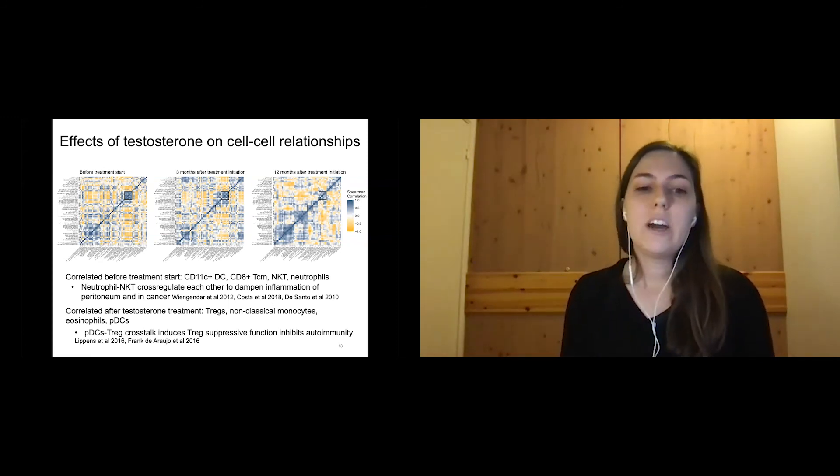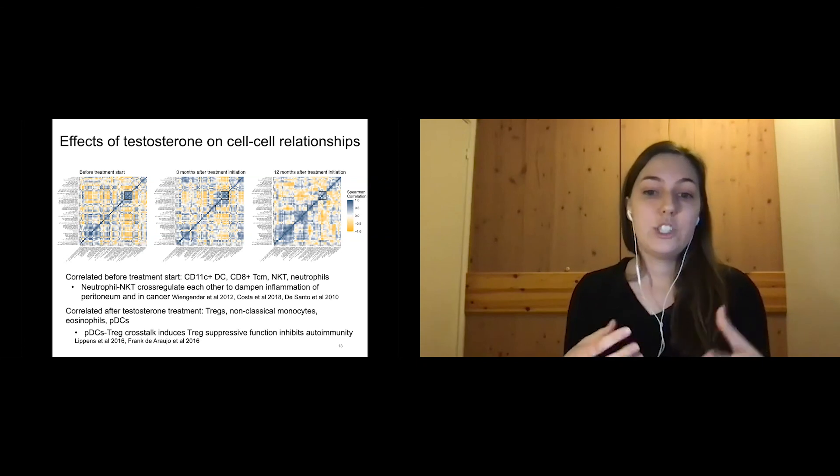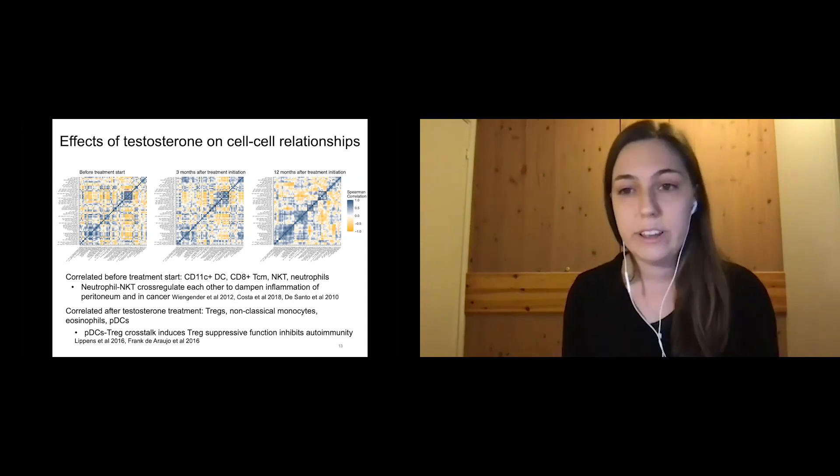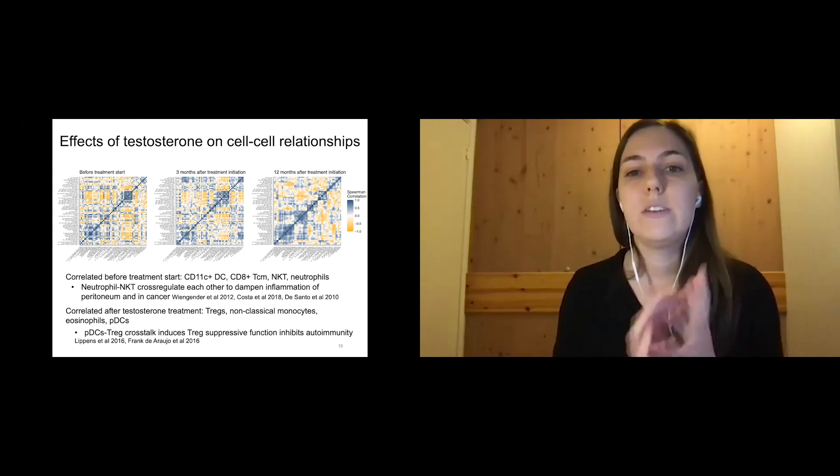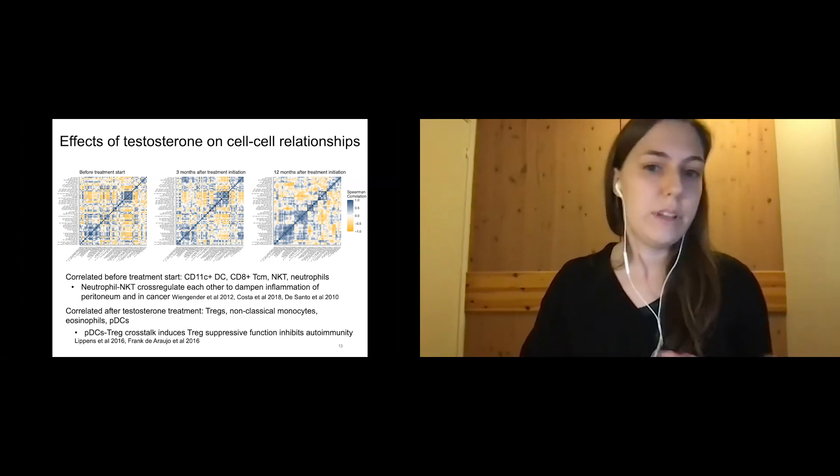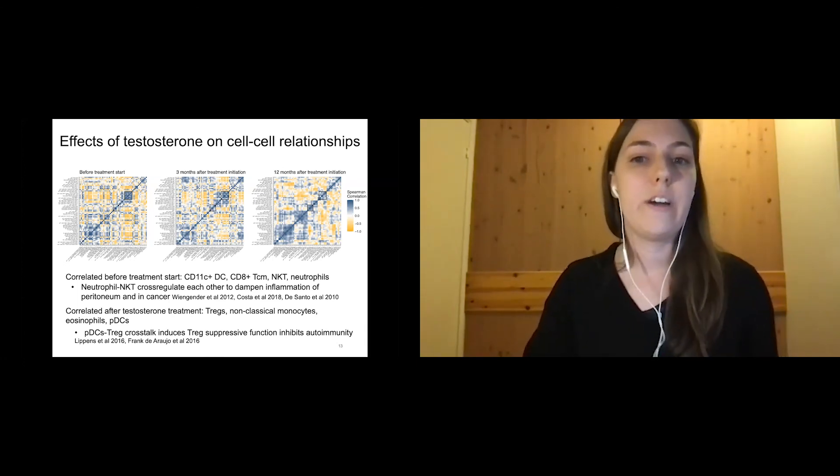Coming back to this correlation and crosstalk between pDCs and Tregs, it could be helping a suppressive function to inhibit autoimmunity, to maybe contain inflammatory insults. The fact that these cell-cell relationships are changing over time could be an indication that an inflammatory process or a viral encounter would be different.